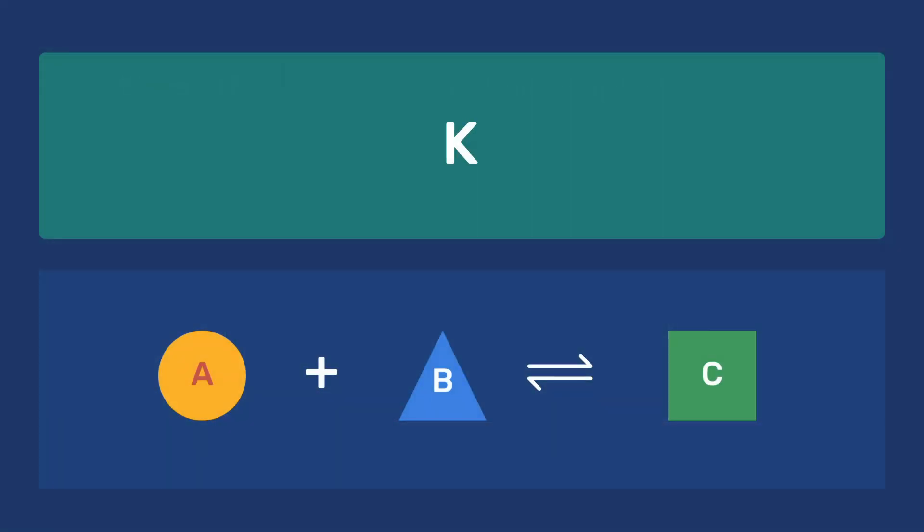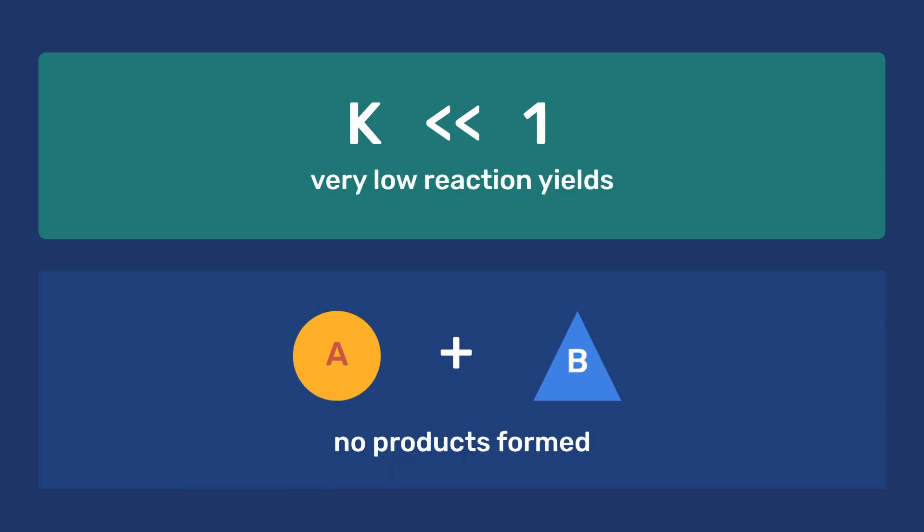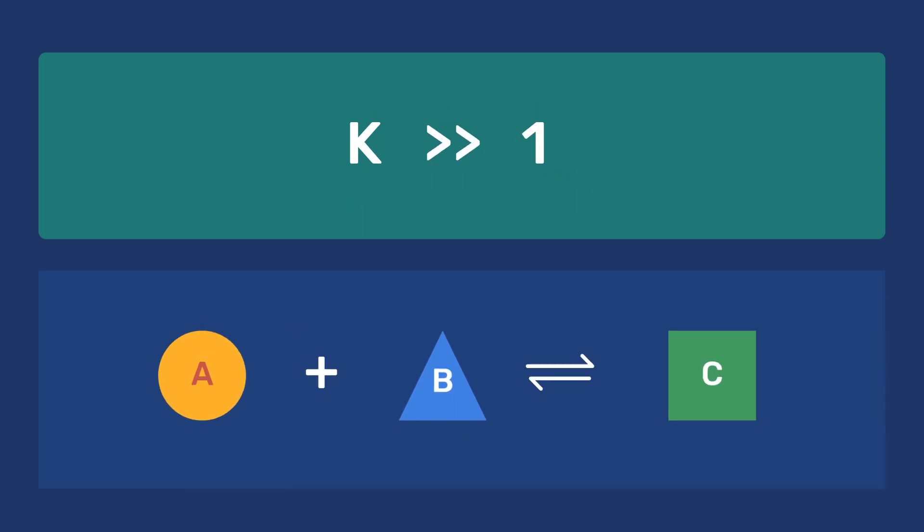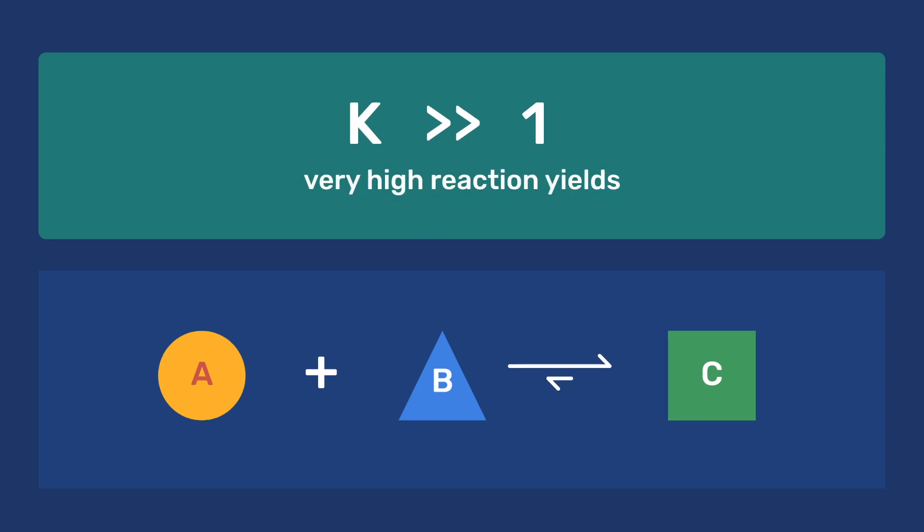Moreover, reactions having a particularly low value of K produce very low reaction yields, while reactions with very high values of K have very high yields, giving complete or almost complete reactions.